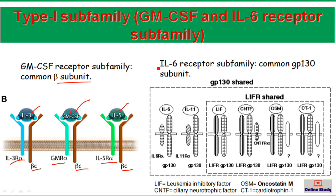The third subfamily is the IL-6 receptor subfamily, which has the common glycoprotein 130 subunit. In this family the cytokines included are IL-6, IL-11, LIF (leukemia inhibitory factor), CNTF (ciliary neurotrophic factor), OSM (oncostatin M), and CT-1 (cardiotropin). In all cases they share the glycoprotein 130 subunit of the receptor along with their specific receptor subunits.